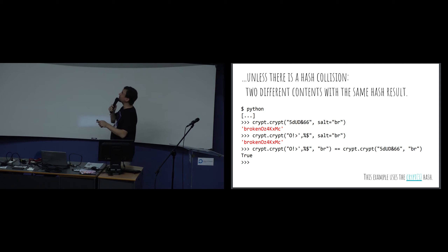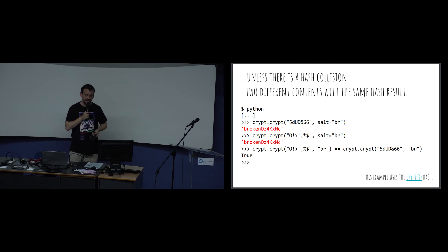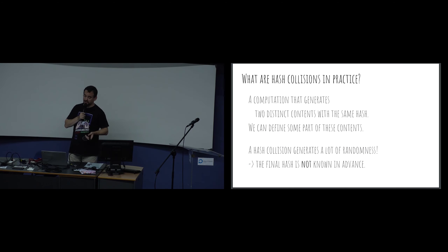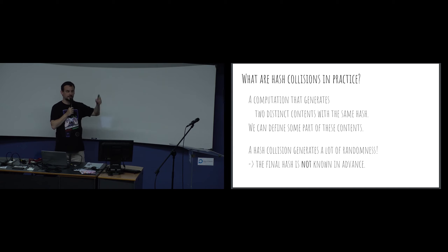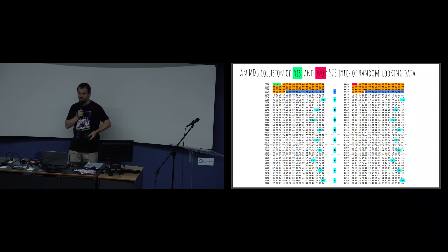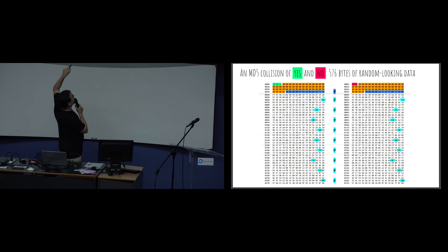Sometimes there is a hash collision. In the case of a very simple hash that is not considered secure, two different contents give the same hash value. Some hashes like MD5 and SHA-1 were initially designed to be secure. A hash collision is a computation that generates two distinct contents with the same hash. We can define some part of this content, but not a lot. Importantly, it doesn't create the hash we want - it creates two contents that get some hash unknown in advance.